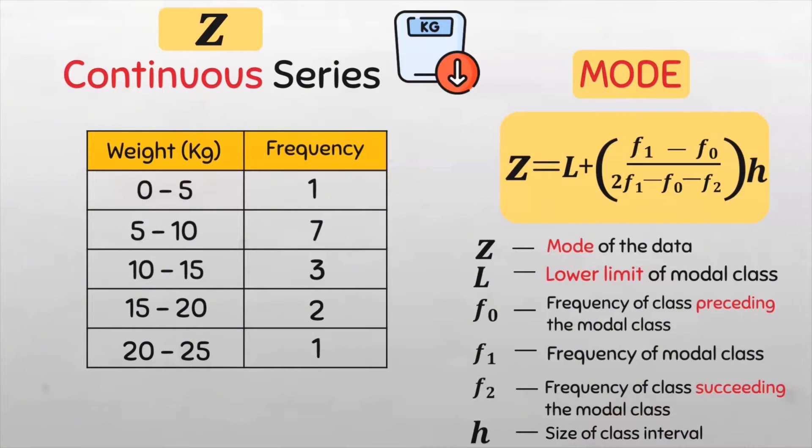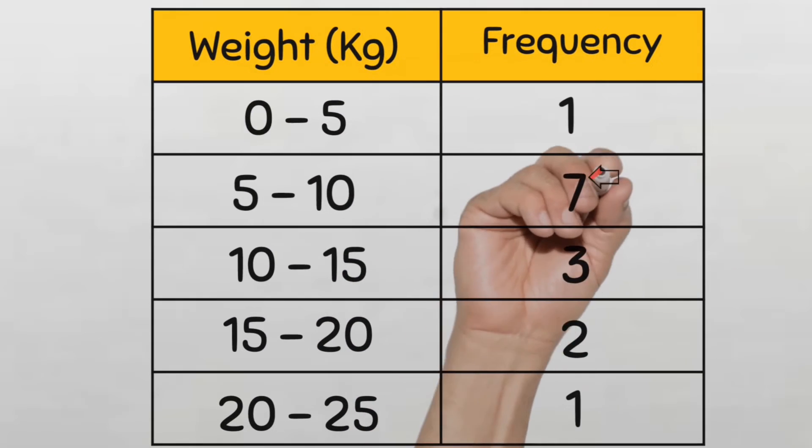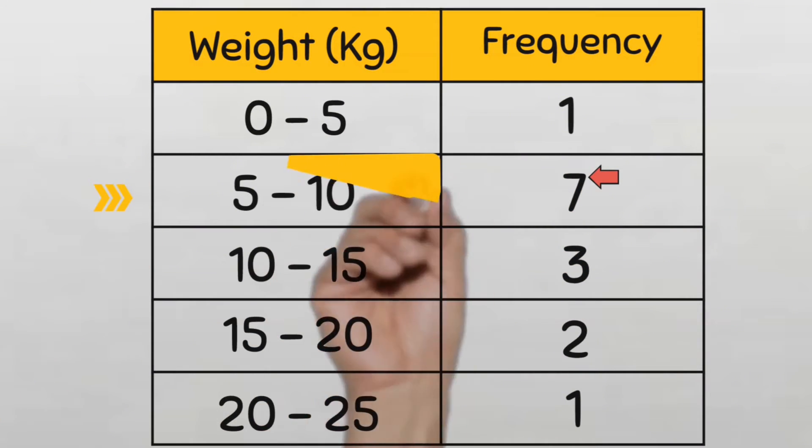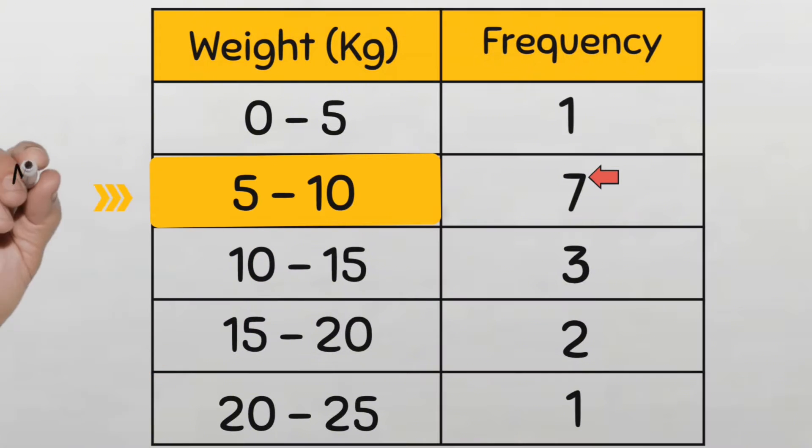So let us apply this formula to find the mode of this data. First we need to identify the class with the highest frequency, and this is called the modal class. The highest frequency is here, 7, and this belongs to the 5 to 10 kilograms weight class. So this is our modal class.